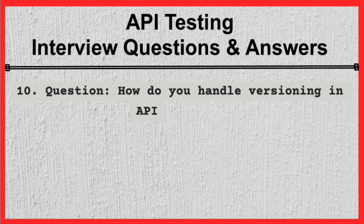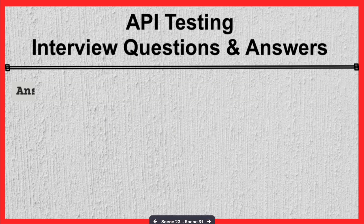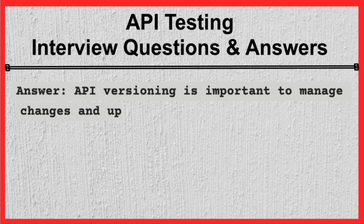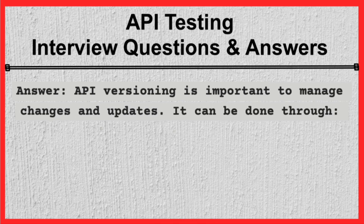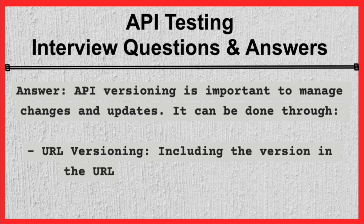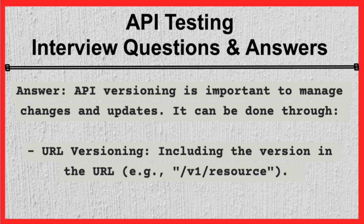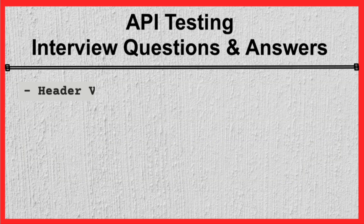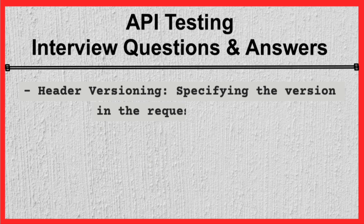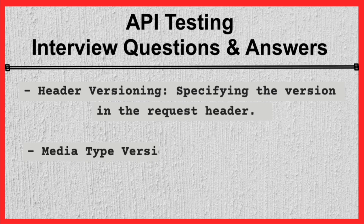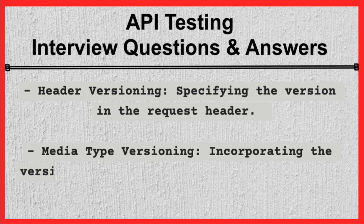Question 10. How do you handle versioning in API testing? Answer. API versioning is important to manage changes and updates. It can be done through URL versioning — including the version in the URL, e.g. /v1/resource; Header versioning — specifying the version in the request header; or Media type versioning — incorporating the version in the media type of the request and response.